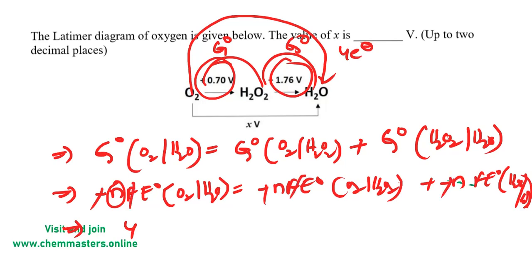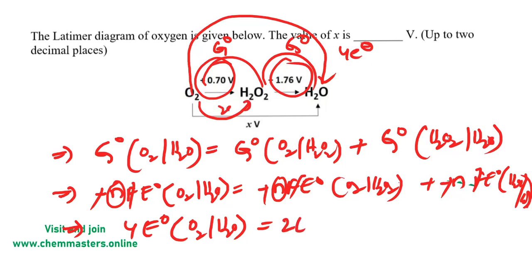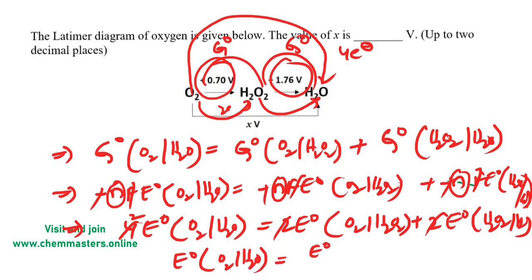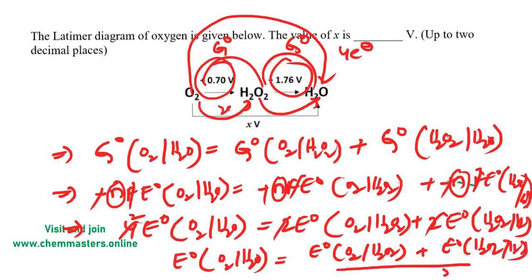We then get: 4 × E°(O₂→H₂O) = 2 × E°(O₂→H₂O₂) + 2 × E°(H₂O₂→H₂O), since each step involves 2 electrons. Dividing both sides by 4, we arrive at: E°(O₂→H₂O) = [E°(O₂→H₂O₂) + E°(H₂O₂→H₂O)] / 2. Substituting the values gives us 1.23 V, which is our answer.